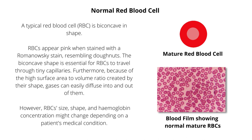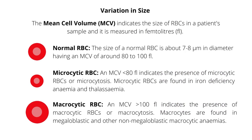However, red blood cell size, shape, and hemoglobin concentration might change depending on a patient's medical condition. The mean cell volume indicates the size of RBCs in a patient's sample and it is measured in femtoliters. The size of a normal red blood cell is about 7-8 micrometers in diameter, having a mean cell volume of around 80-100 femtoliters. An MCV less than 80 femtoliters indicates the presence of microcytic red cells or microcytosis, found in iron deficiency anemia and thalassemia. An MCV more than 100 femtoliters indicates the presence of macrocytic red cells or macrocytosis, found in megaloblastic and other non-megaloblastic macrocytic anemias.